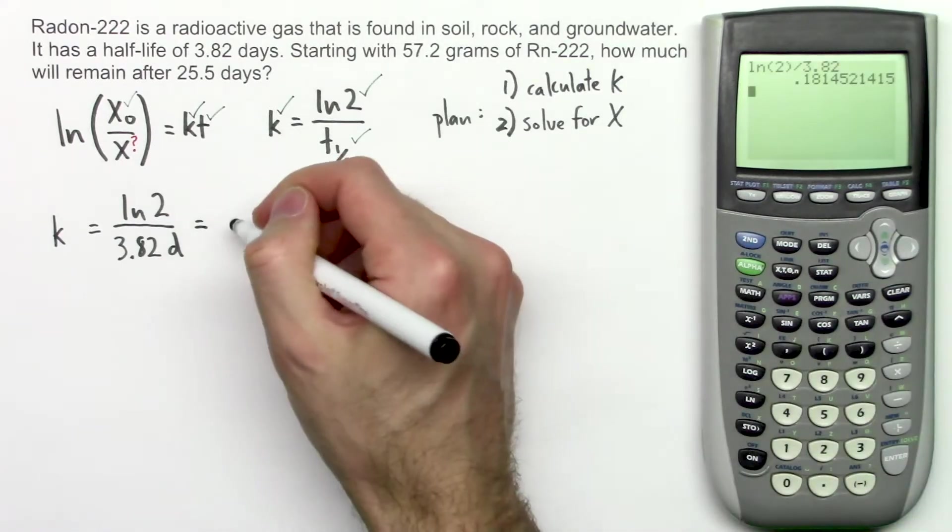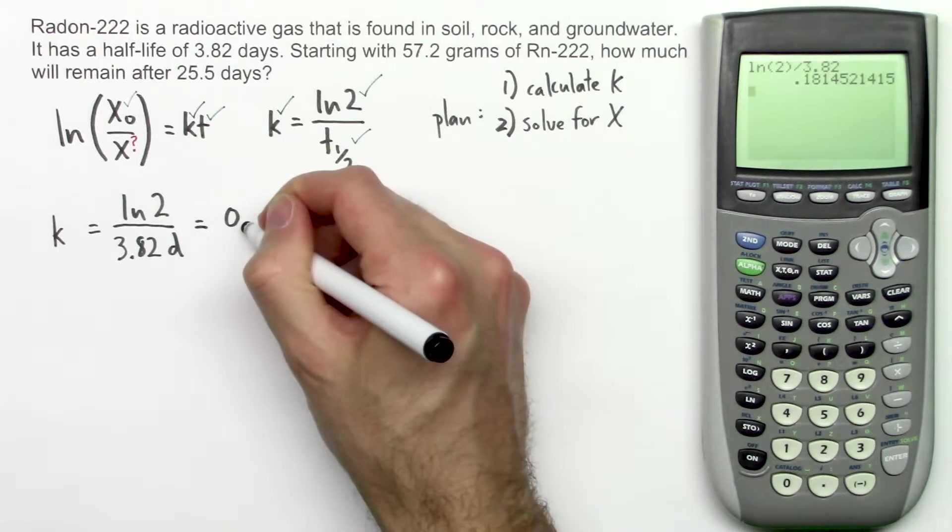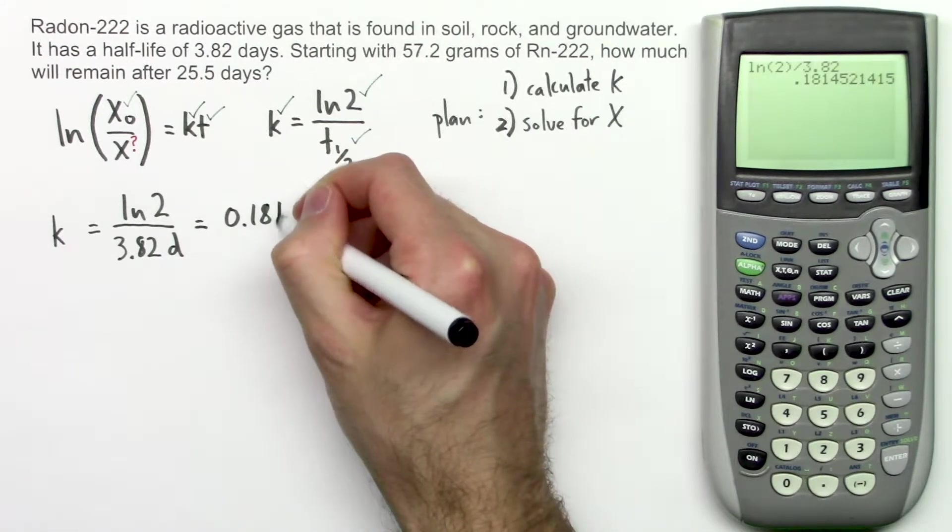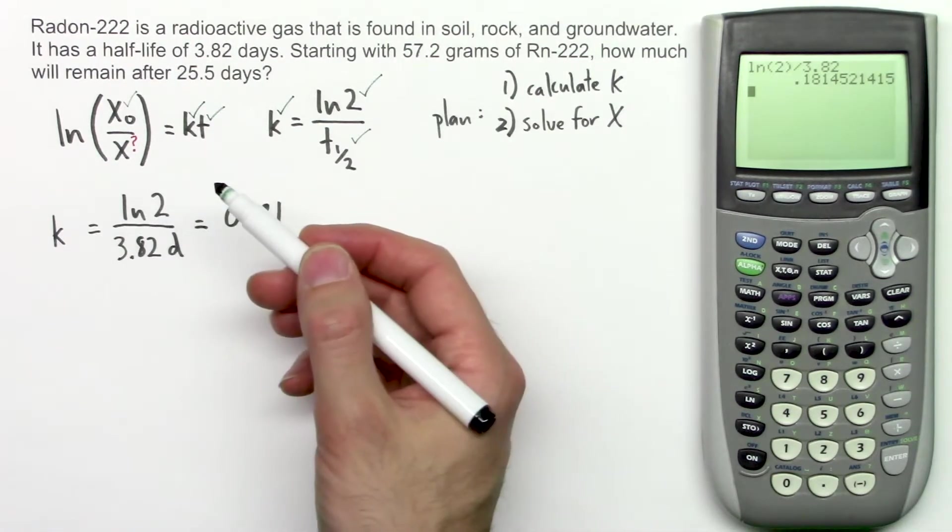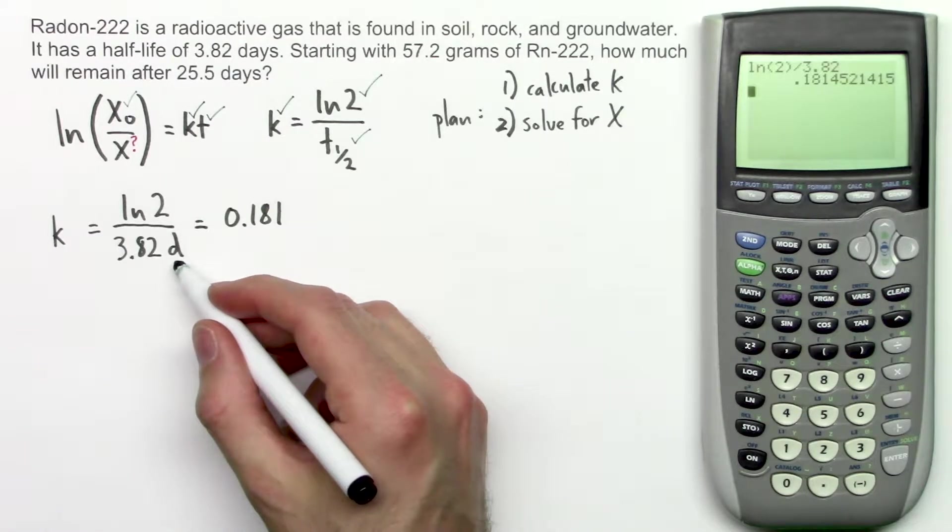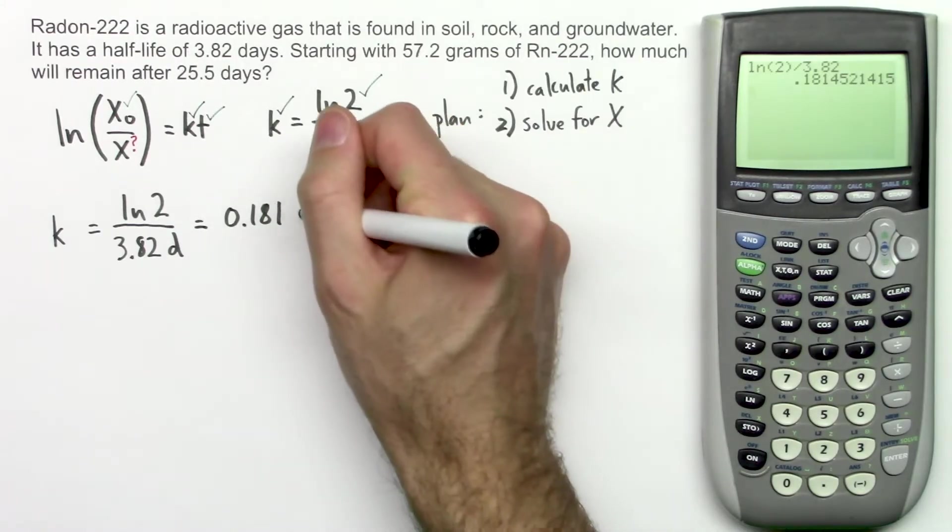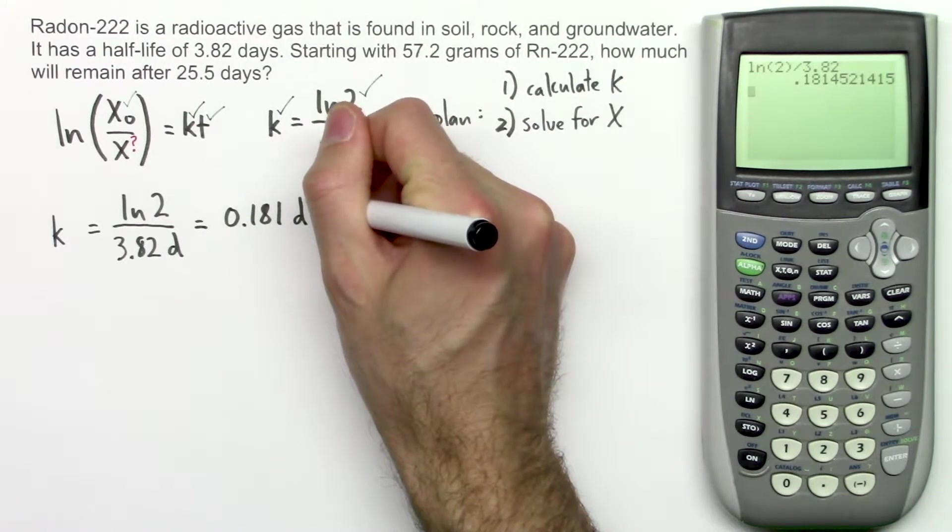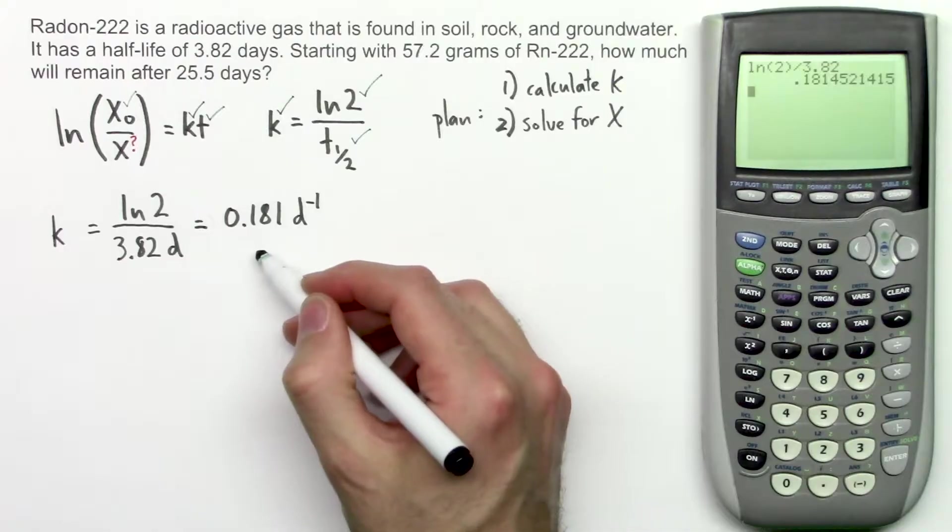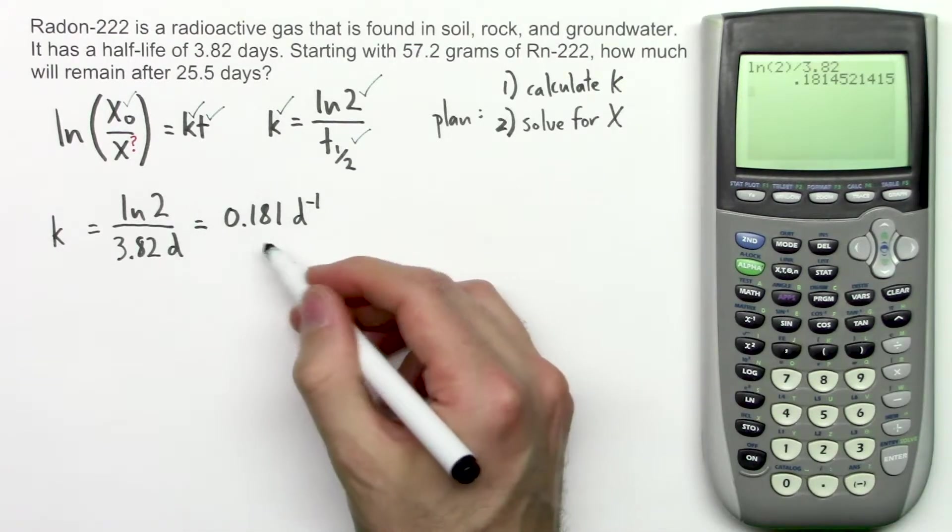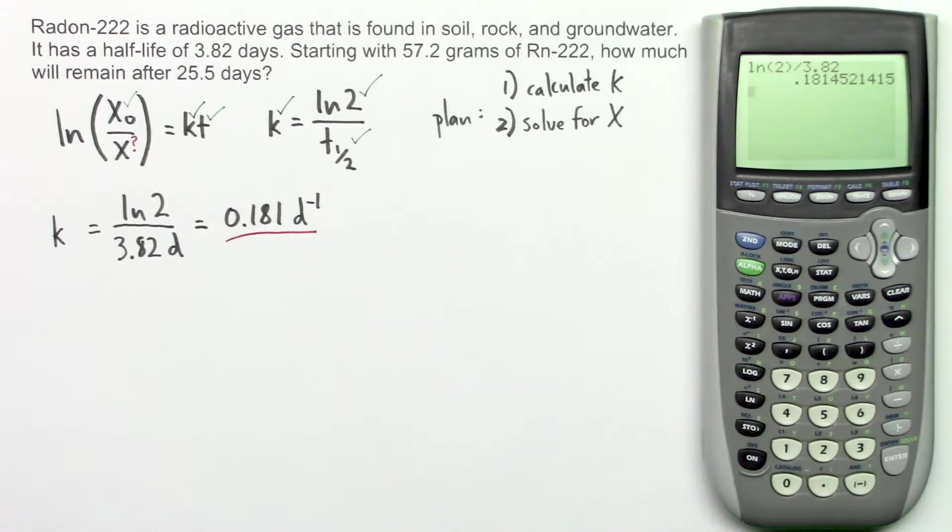There's the answer. I'm going to round this to three significant figures, because there are three significant figures in that number down there. So 0.181. Now what about the units? There were no units in ln2 up here. That was just a number. And then we have days in the denominator of this fraction. So we keep these units, days in the denominator of the fraction. We can also write that as days to the negative first, or inverse days. This means that days are in the denominator of a fraction. So this is what k equals: 0.181 inverse days.